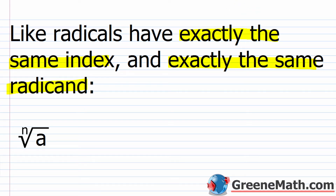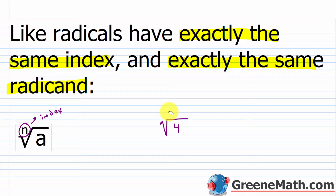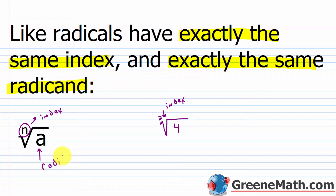In case you forgot the terminology: this right here is your index. A lot of times we work with square roots, and when you see a square root like the square root of 4, the index is left blank — but really the index is a 2. With square roots, because they're so common, we just leave it blank and it's understood to be a 2. The number or variable underneath your radical symbol is known as the radicand. So A would be called the radicand.